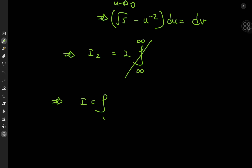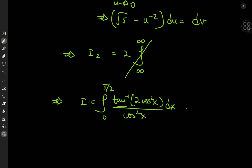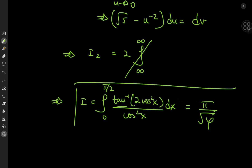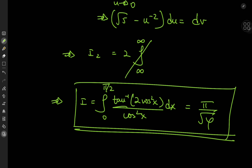So the target integral — from 0 to π/2 of arctan(2cos²x) divided by cos²(x) dx — evaluates to the beautifully elegant result π divided by the square root of the golden ratio. I hope you enjoyed the video; be sure to like and subscribe. Thank you, see you next time.